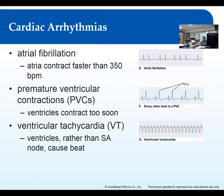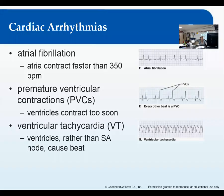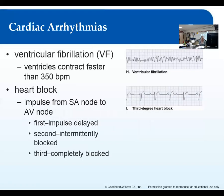Premature ventricular contractions, or PVCs, are where the ventricles contract too soon — not waiting for the nodes to tell them to, just doing their own thing. On the EKG you get a regular beat and then suddenly another one squeezed in quickly. Single PVCs are not dangerous, but if you get them frequently — more than six per minute — it could be dangerous. Ventricular arrhythmias are much more dangerous generally than atrial ones.